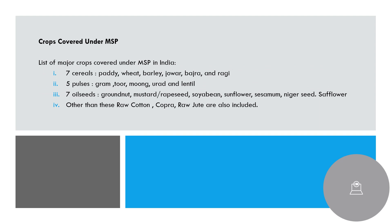Let's look at which crops are covered under MSP. There are 22 crops in total. There are 7 cereals: Paddy, Wheat, Barley, Jowar, Bajra, and Ragi. For pulses: Gram, Toor, Mung, Urad, and Lentils are covered. Oilseeds include Groundnut, Mustard, and Sunflower. In addition, Cotton, Copra, and Raw Jute are included. You should have a basic idea of these so you can eliminate wrong options in Prelims questions.